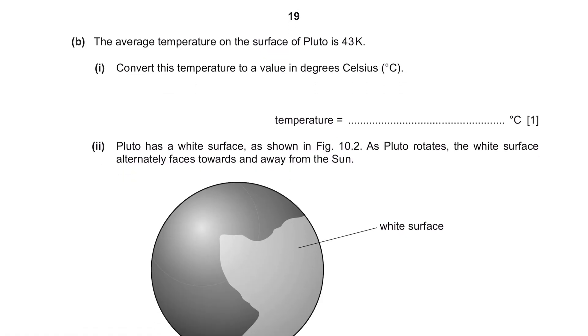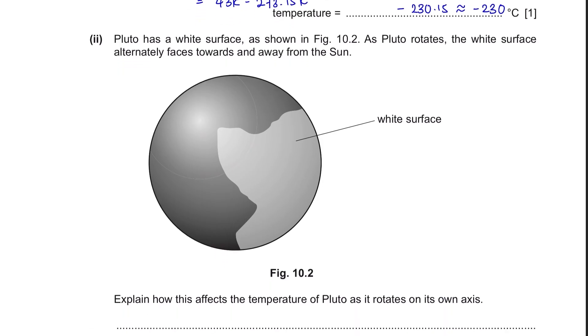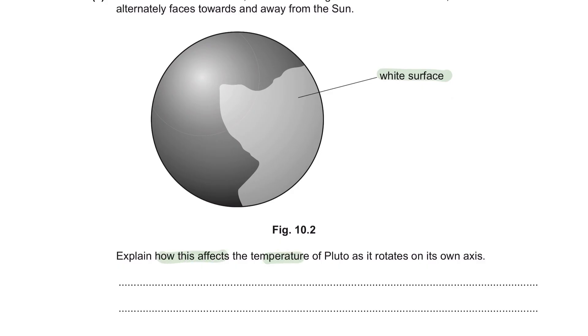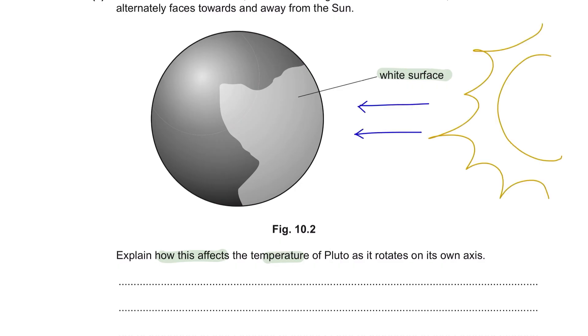Question B. The average temperature on the surface of Pluto is 43 Kelvin. Part 1: Convert this temperature to a value in degree Celsius. Temperature in degree Celsius is the temperature in Kelvin minus 273.15 Kelvin. So 43 Kelvin minus 273.15 Kelvin will give us a temperature in degree Celsius which is negative 230.15 which is approximately negative 230 degree Celsius. Part 2: Pluto has a white surface as shown in figure 10.2. As Pluto rotates, the white surface alternately faces towards and away from the sun. Explain how this affects the temperature of Pluto as it rotates on its own axis. When the white surface is facing the sun, there will be an increase in temperature. Alternatively, as it faces away from the sun, will experience a decrease in temperature.